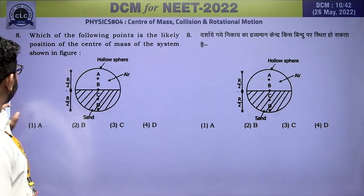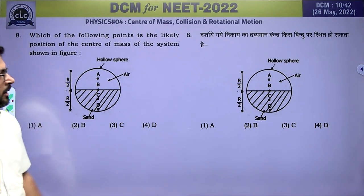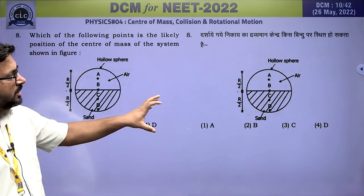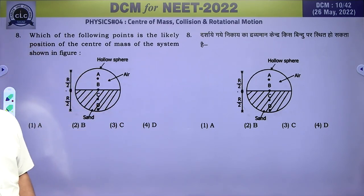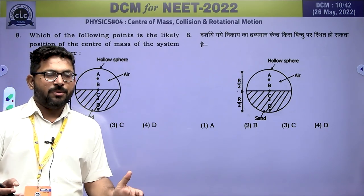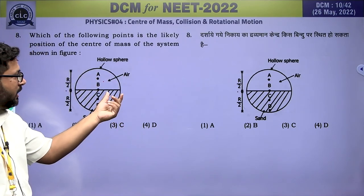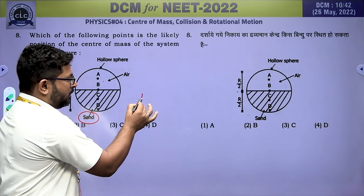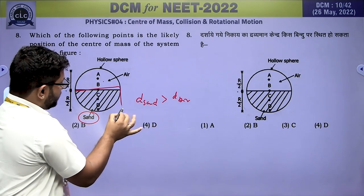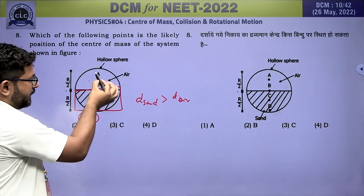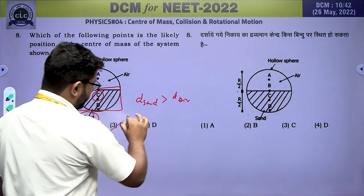Question 8: which of the following points is the likely position of the centre of mass of the system shown in figure? The centre of mass always shifts towards the region of higher mass distribution. One part is hollow (air-filled), the other is sand-filled. Since density of sand > density of air, the centre of mass lies in the sand-filled region — most likely at point C.